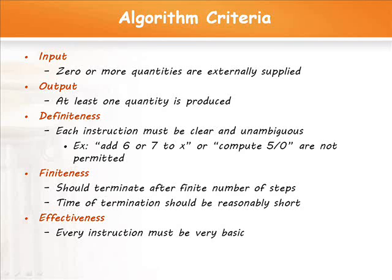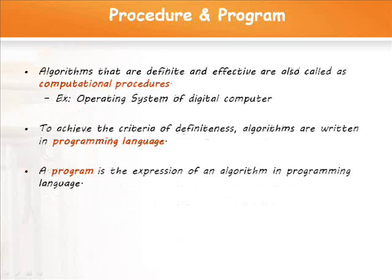The fifth criteria is effectiveness. Every instruction must be very basic so that it can be carried out in principle by a person using only pencil and paper. Alternatives that are definite and effective are called computational procedures. One important example of computational procedures is the operating system of digital computers. The procedure is designed to control the execution of jobs in such a way that when no jobs are available, it does not terminate but continues in a waiting stage until a new job is entered.